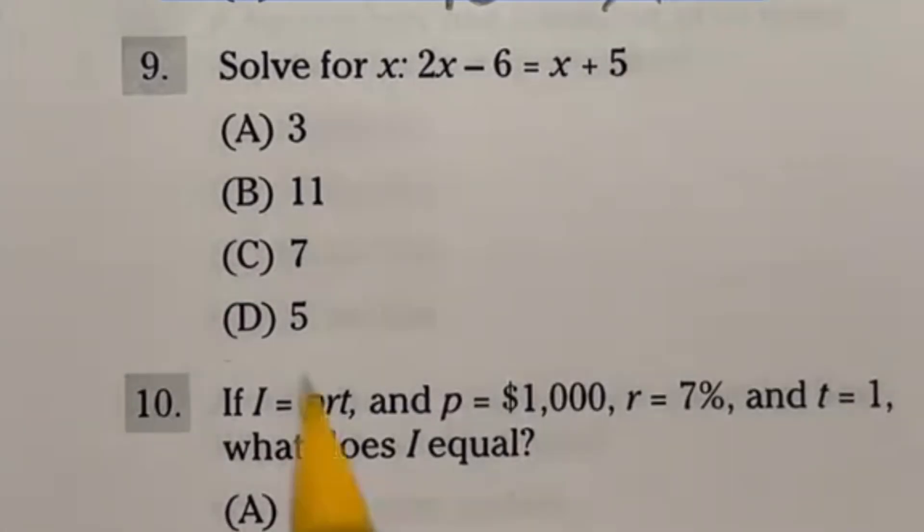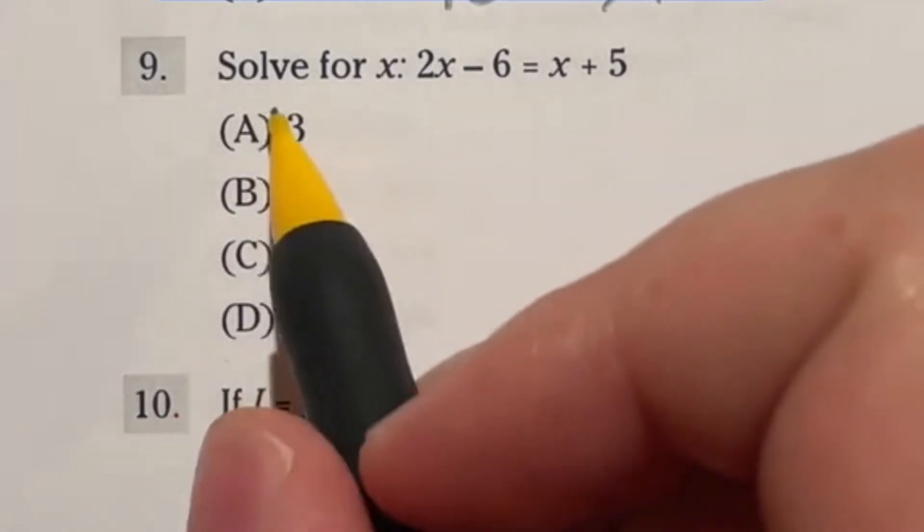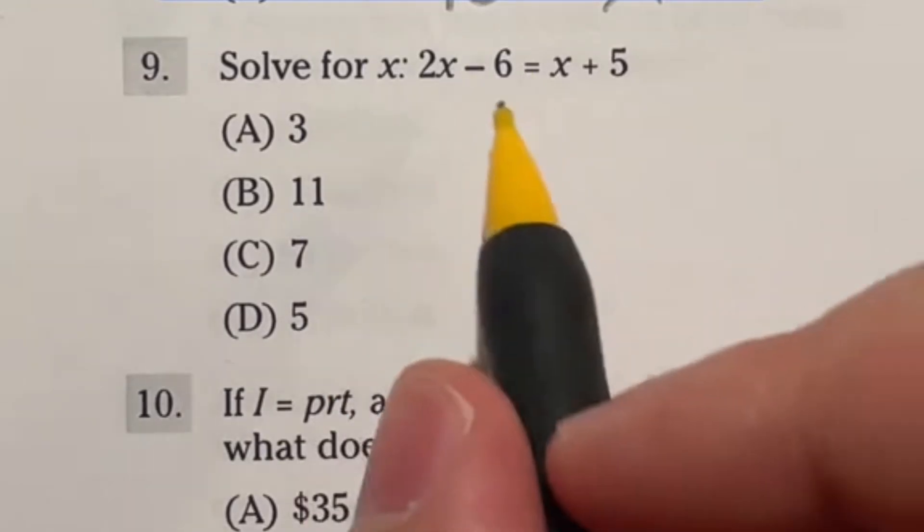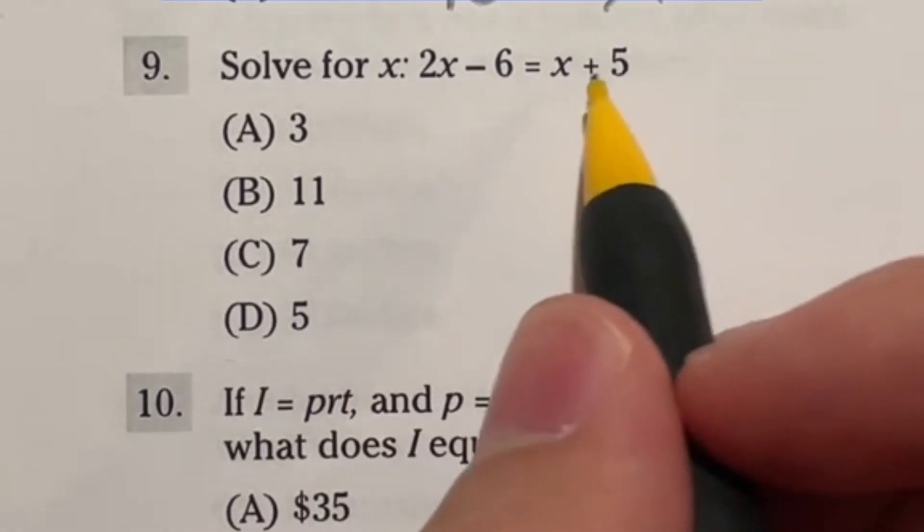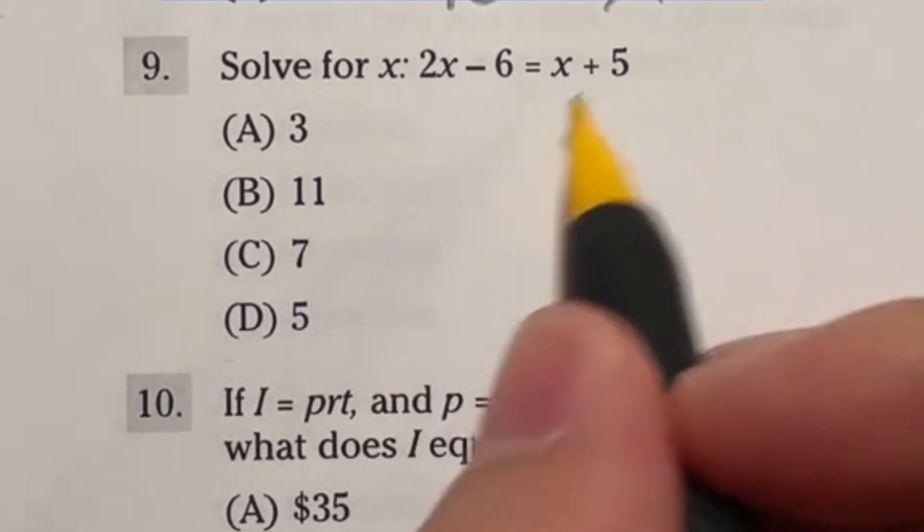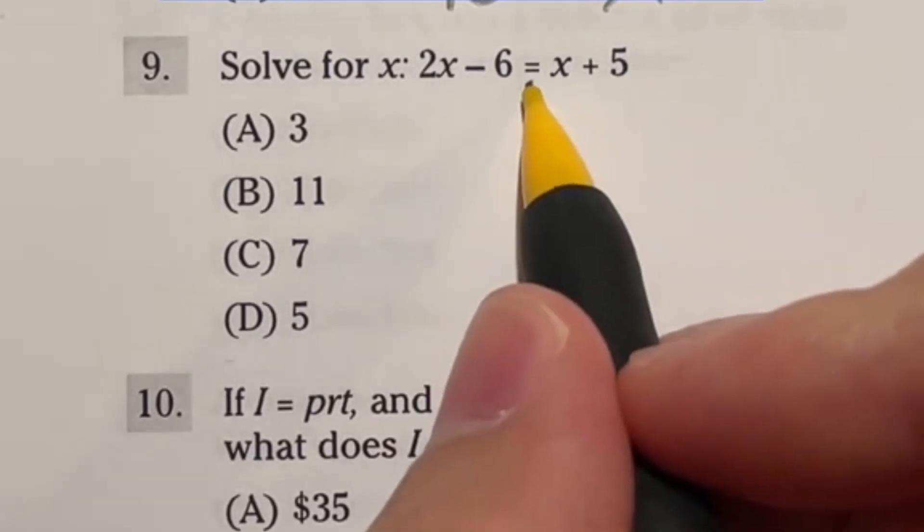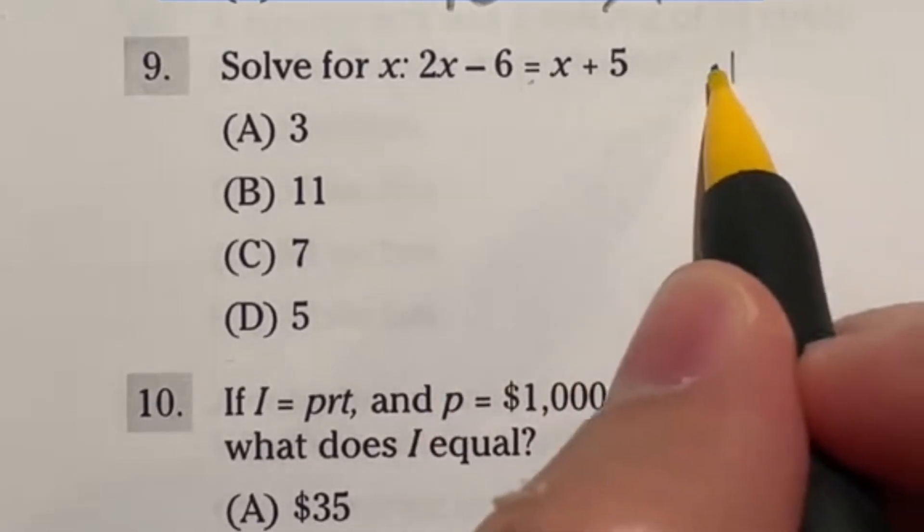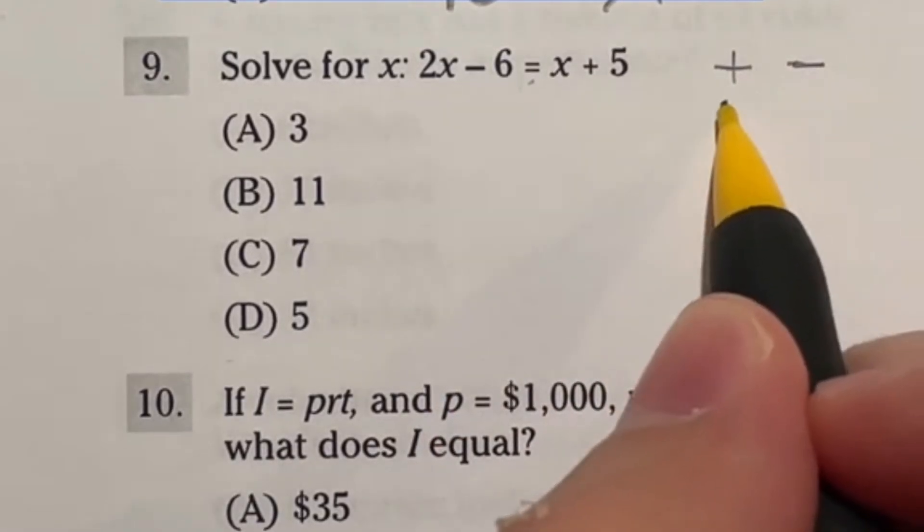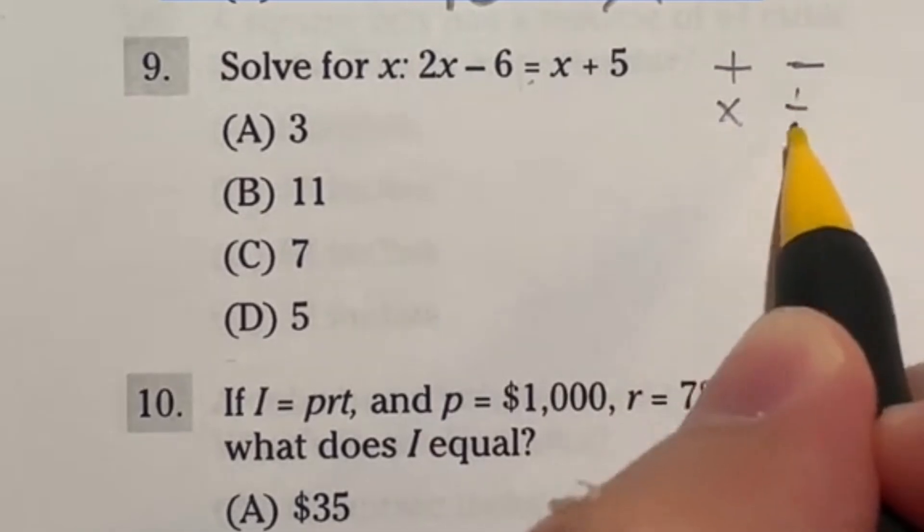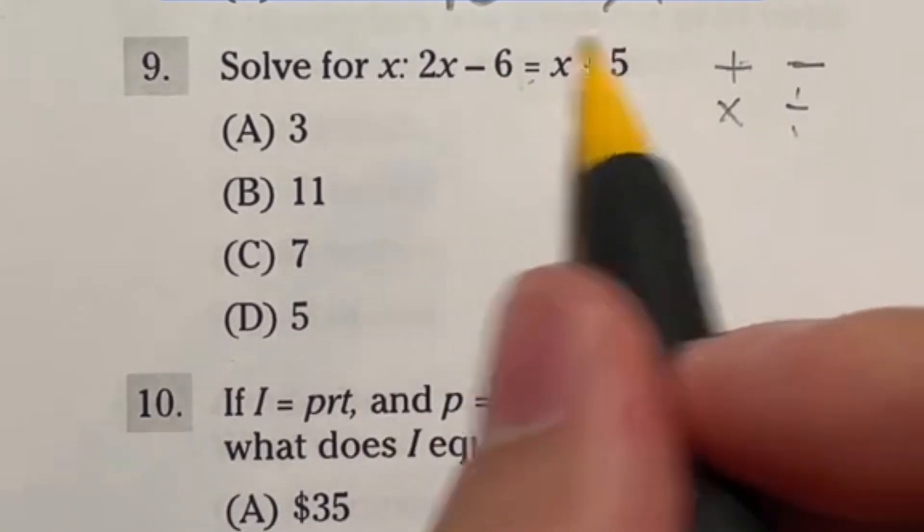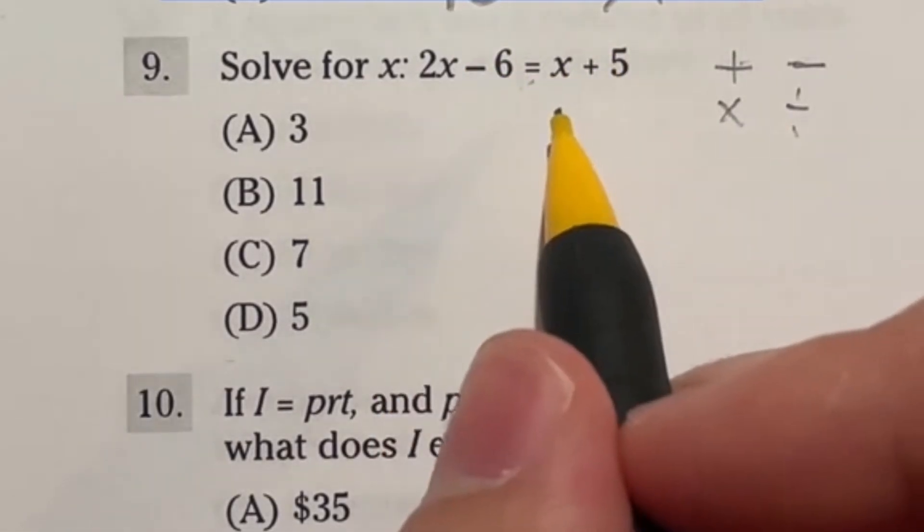Number 9 is a pretty basic algebra question where it's just going to ask us to solve for our x. This is just the military entrance exam, so I'm sure it's not meant to be too hard. Remember, to move things to the other side of an equation, you do the opposite of what is currently on there. If you're adding, the opposite of that is subtracting. If you're multiplying, the opposite of that is dividing. So anytime you see one of these, you do the opposite to move it to the other side, and then you just do that to both sides.